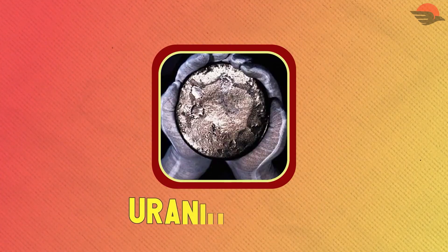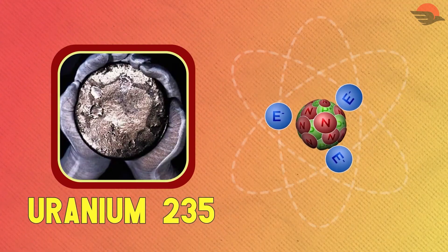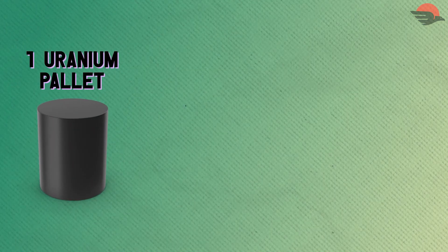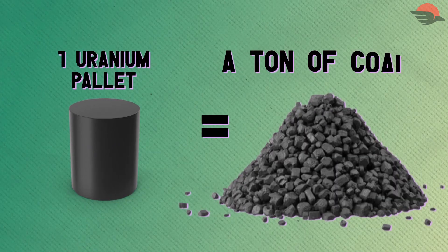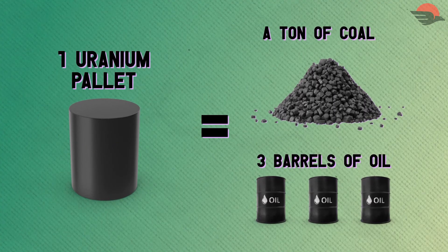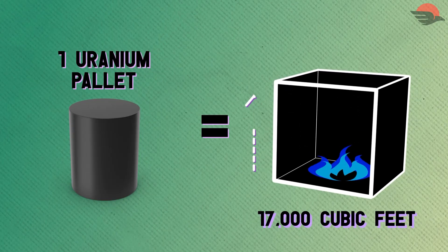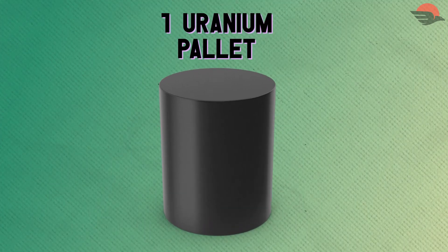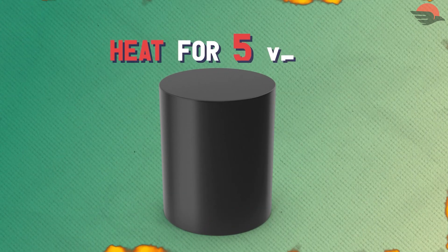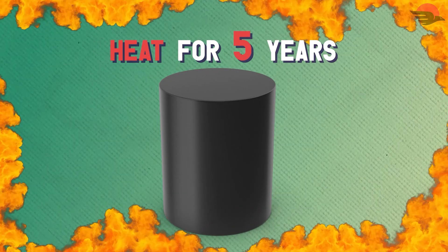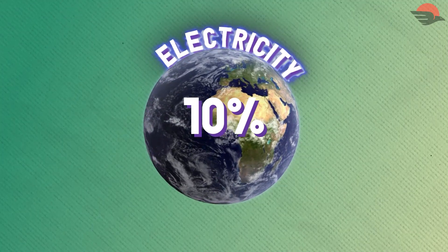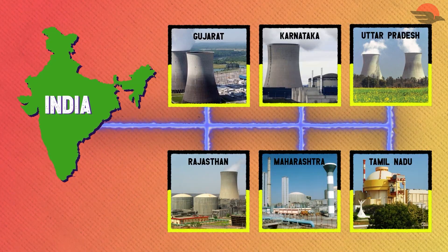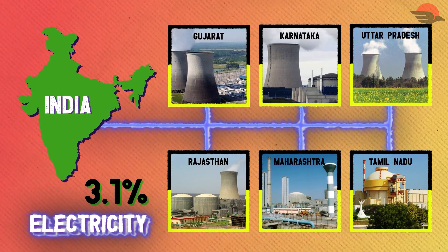Why uranium-235? Because comparatively, uranium-235 atoms split easily, forming barium-139 and krypton-94. Now, one uranium pellet — slightly larger than an eraser — is equal in energy to a ton of coal, three barrels of oil, and 17,000 cubic feet of natural gas. This small uranium pellet can provide heat for 5 years. And today, 10% of the world's electricity is provided by nuclear energy. India has 6 nuclear power plants, which generate 3.11% of the nation's electricity.